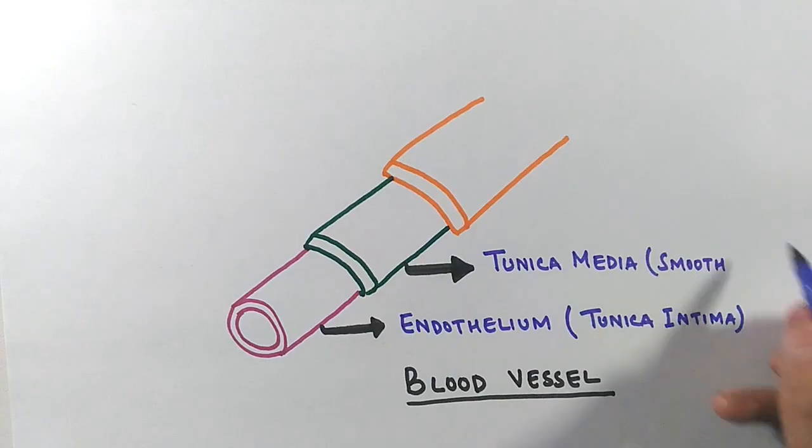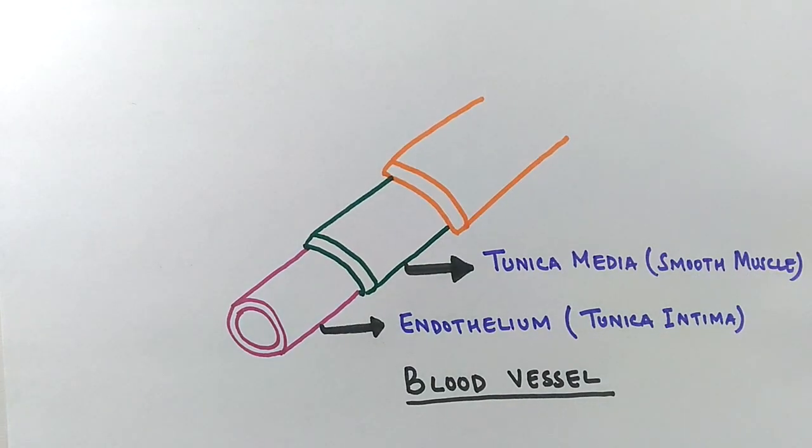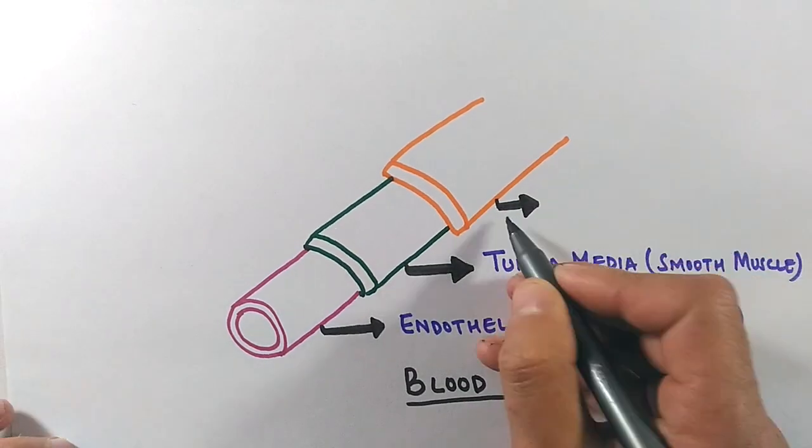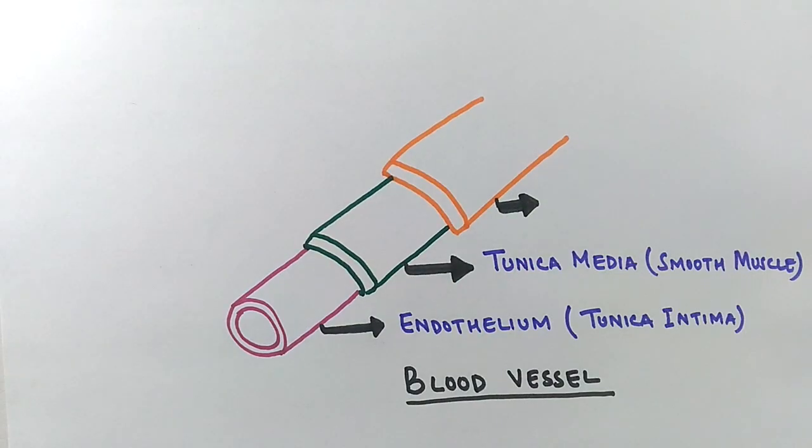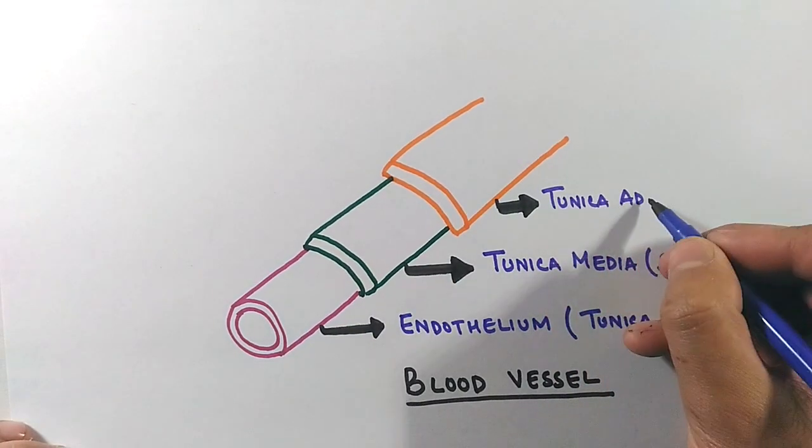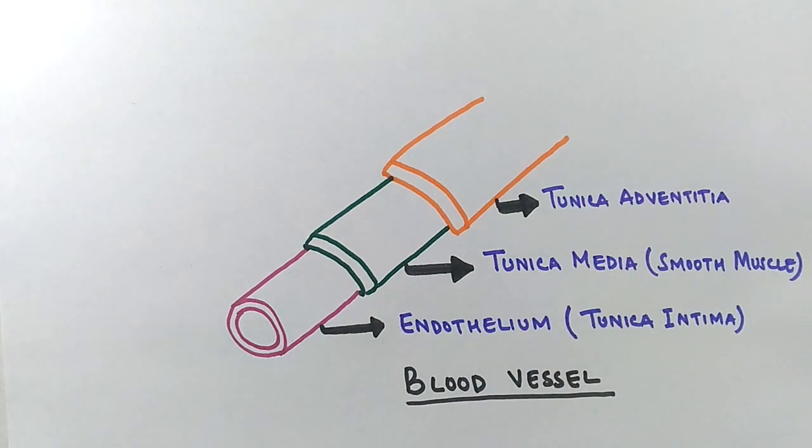This layer contains the smooth muscle cells, so smooth muscle is altogether present in tunica media. Then we have the last layer, tunica adventitia, the external layer also called tunica externa, composed of collagen.